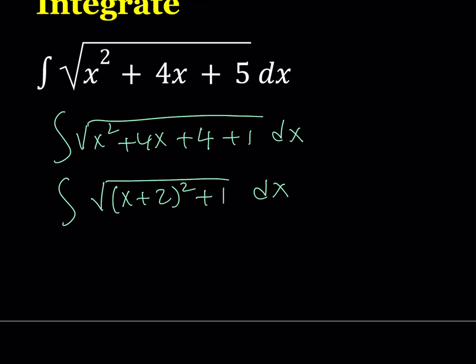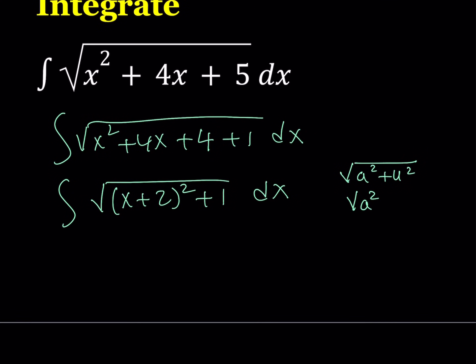This is where trigonometric substitution comes in. If you have a square root of the form a squared plus u squared, that calls for a tangent substitution. If you have a squared minus u squared, that calls for secant, and if you have u squared minus a squared, that calls for sine substitution. Our example calls for tangent substitution.